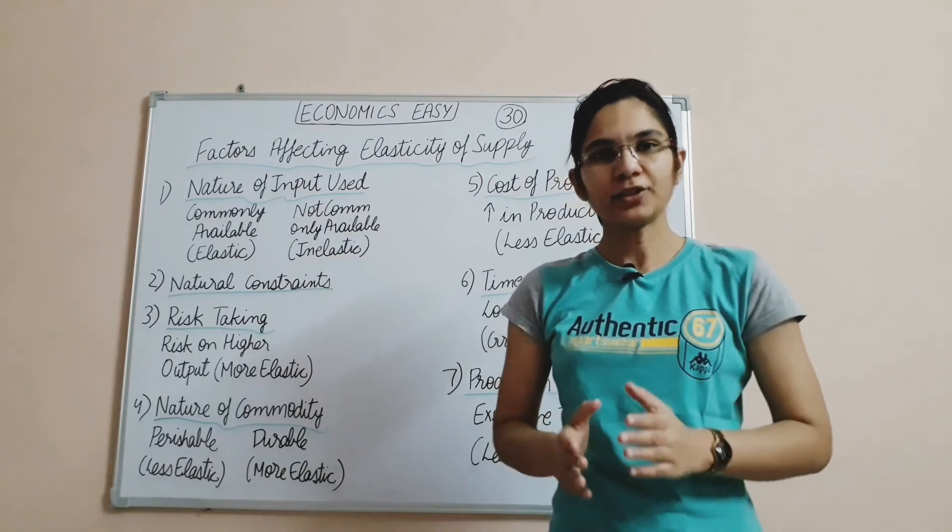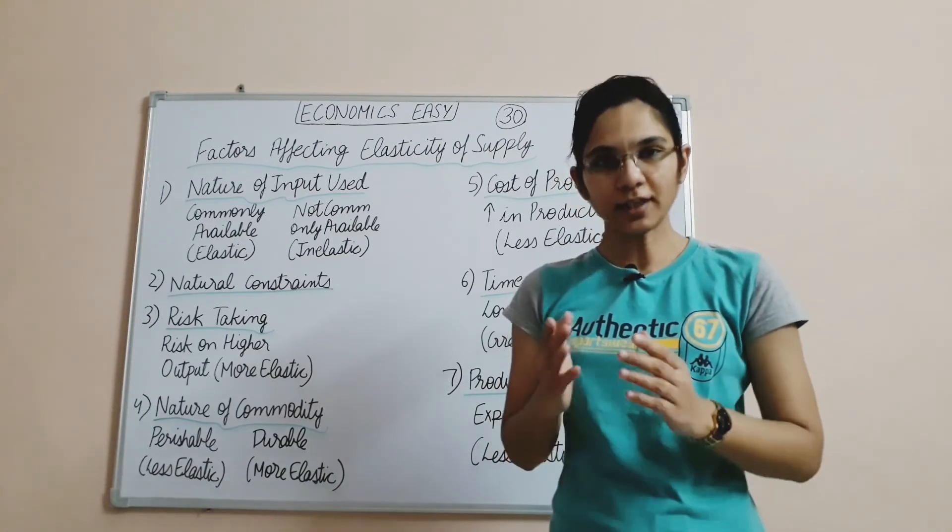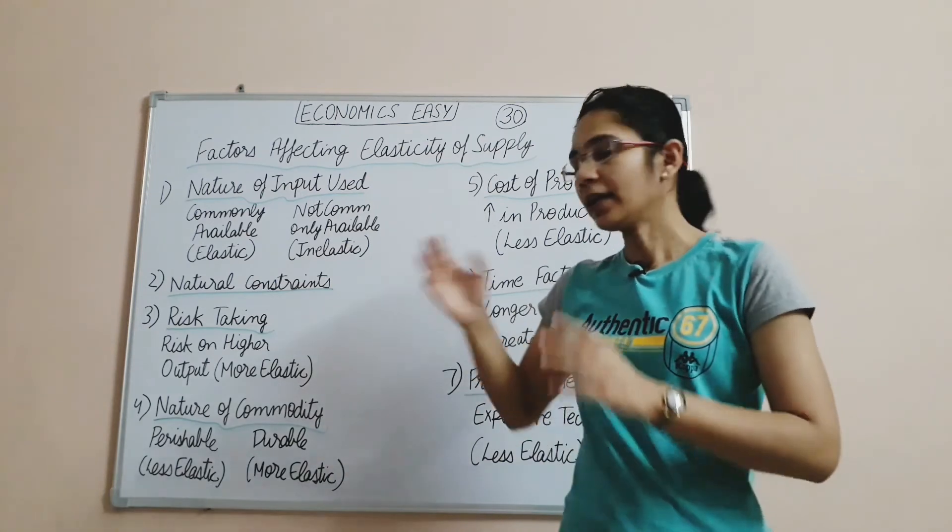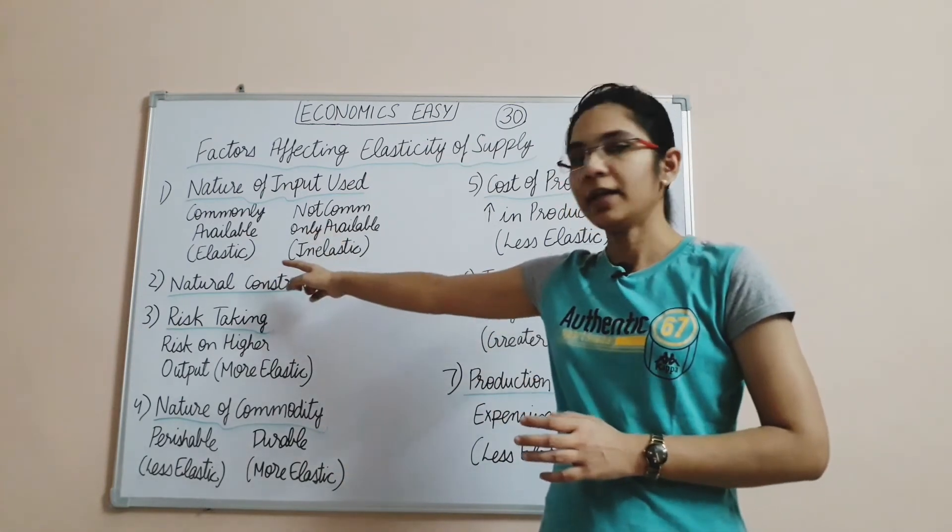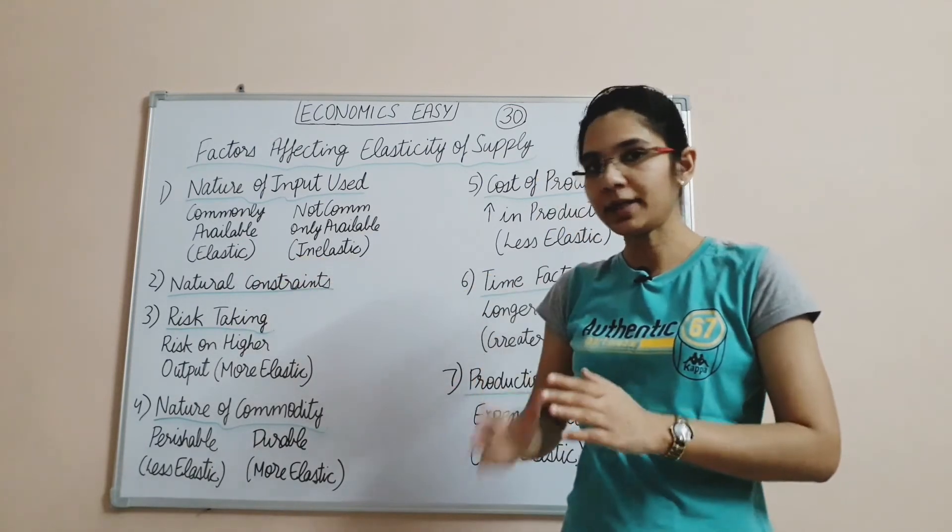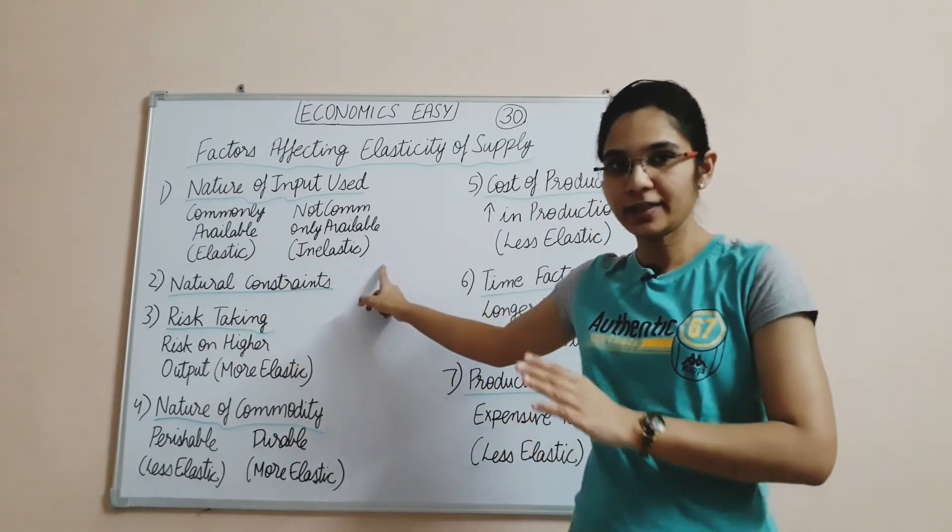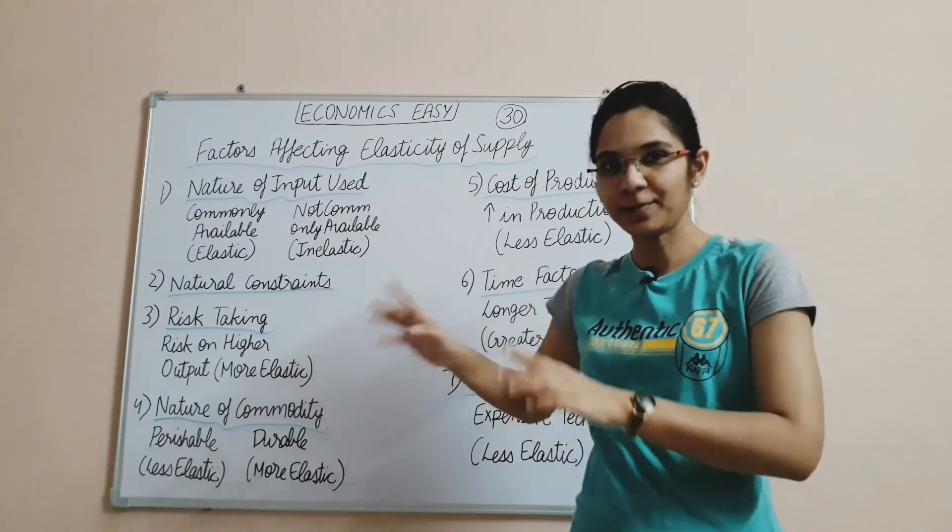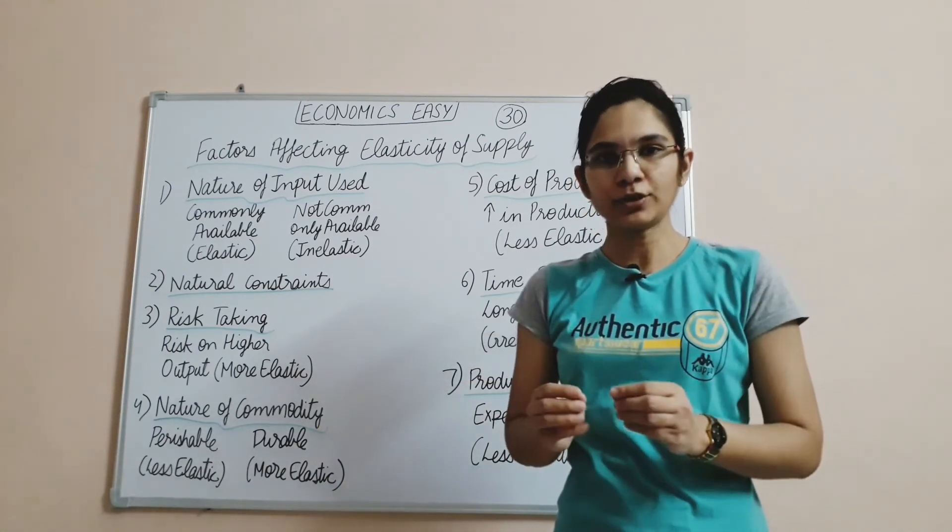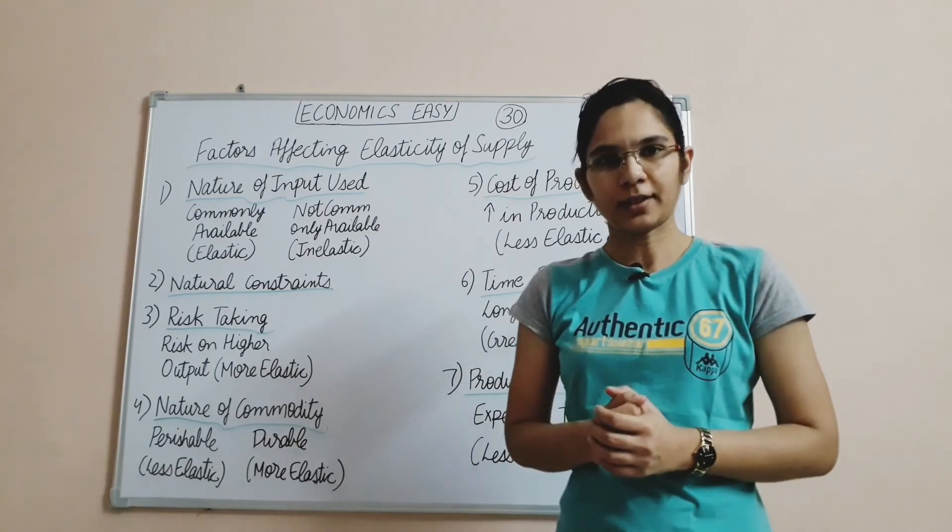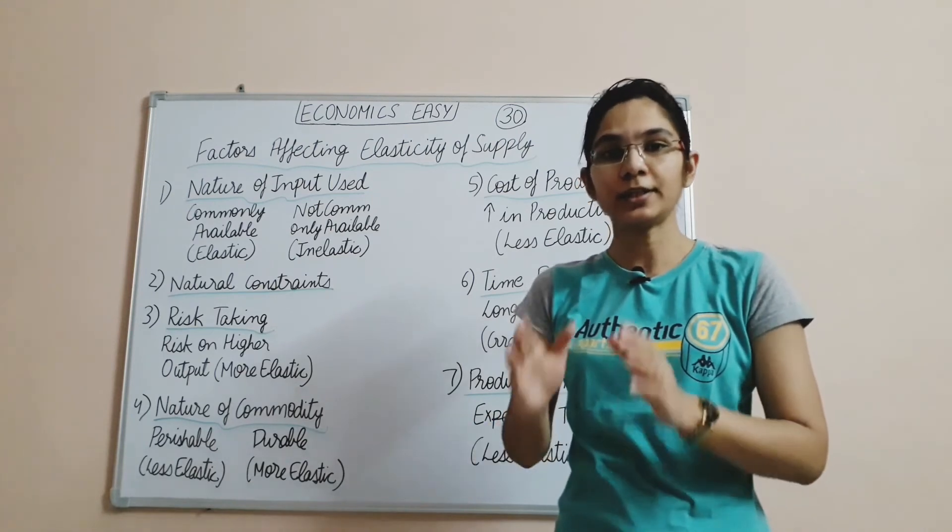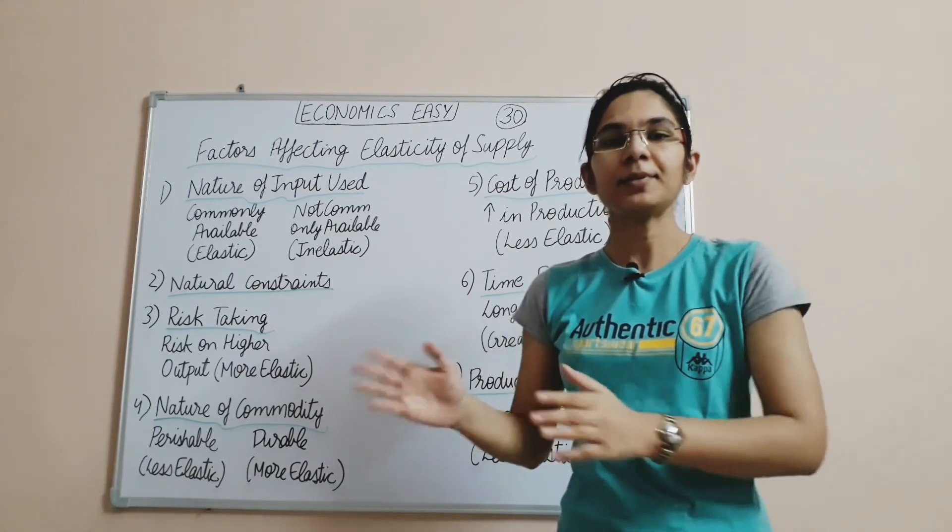Friends, let's see which factors affect elasticity of supply. Factor 1: Nature of Input Used. If a good is commonly available, it will be elastic. If it is not commonly available, it will be inelastic. Factor 2: Natural Constraints. If a producer wants to produce more, we have to plant first. Planting takes many years, so we can produce more later.